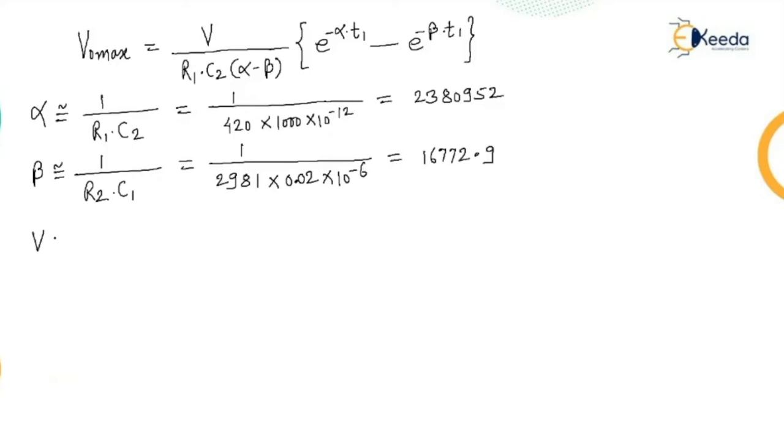Putting the values of R2 2981 and C1 gives me the value for beta which is 16772.9. This V is the charging voltage for 8 number of stages. So this is 8 multiplied by 120 kilovolt, so it comes out to be 960 kilovolt.